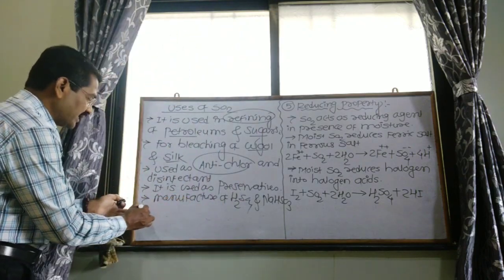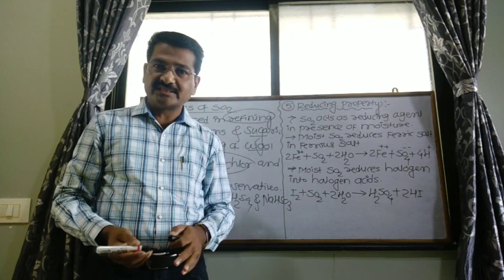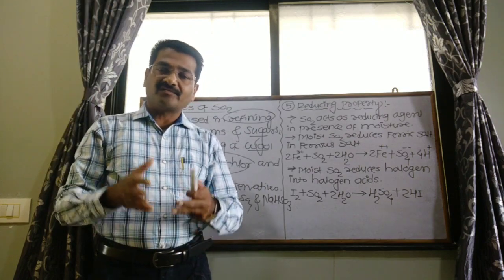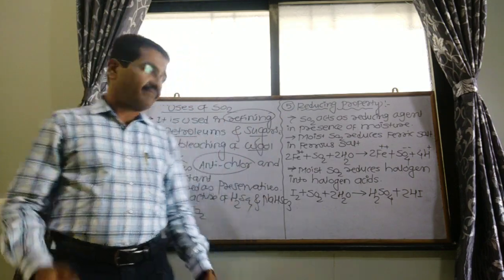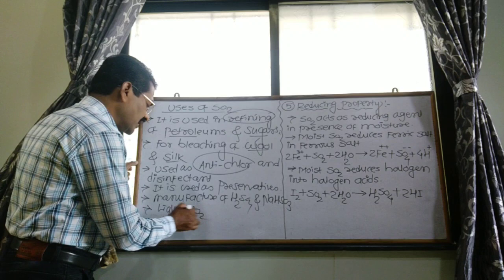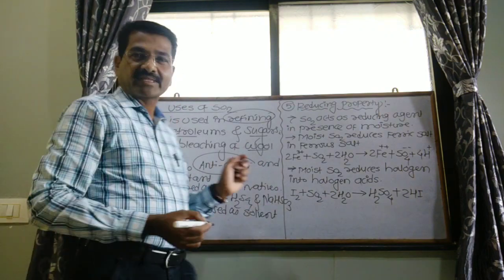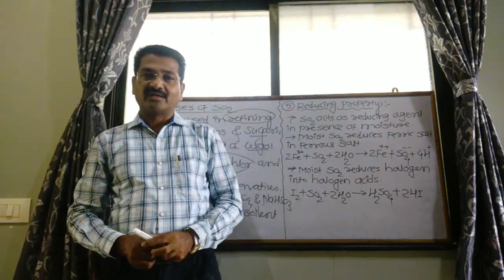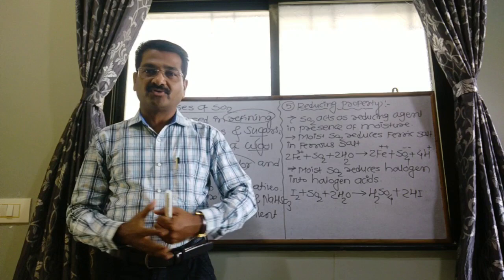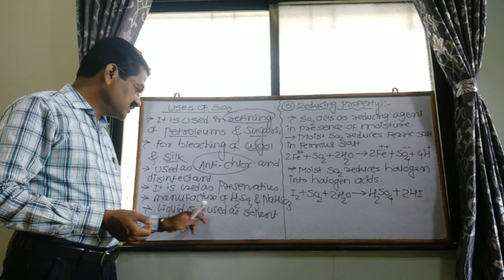Last use: liquid sulfur dioxide. Generally, sulfur dioxide occurs as a gas in the atmosphere due to industrial emissions. But when sulfur dioxide is taken in liquid form, it is used as a solvent. Liquid sulfur dioxide can dissolve a number of organic as well as inorganic compounds that cannot be dissolved in water. So sulfur dioxide is used as a solvent for that purpose.